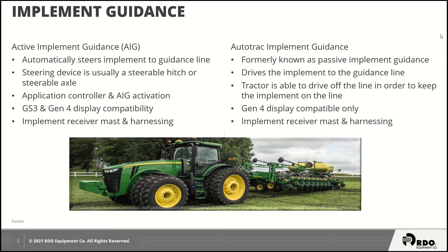Hi, I'm here today to talk to you about implement guidance and some of the different requirements for the two different types that John Deere has to offer. First being active implement guidance or AIG. This is where the implement is automatically steered to the guidance line, steered by some sort of steerable hitch, coulters, or axle.